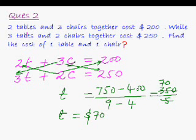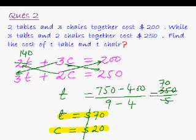Now, find the cost of one chair as well. Put this value of t in this equation. 2 times 70 is 140. So, 3c equal to 200 minus 140. 200 minus 140 would be 60 and 60 divided by 3 is 20. So, cost of chair is $20. So, easily we have solved the question.